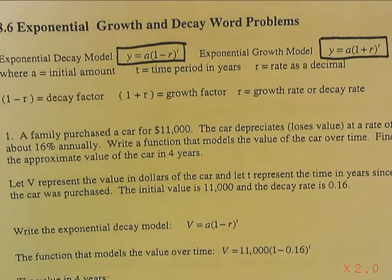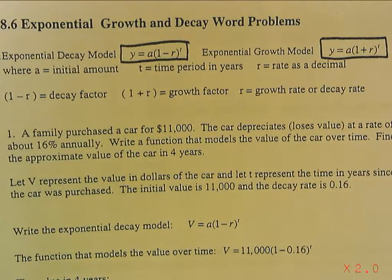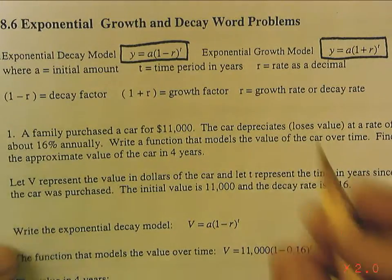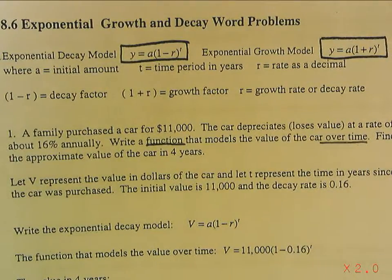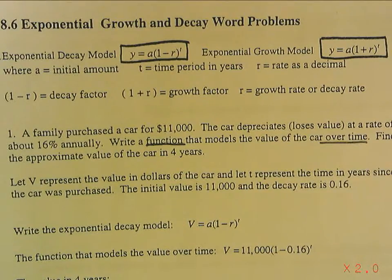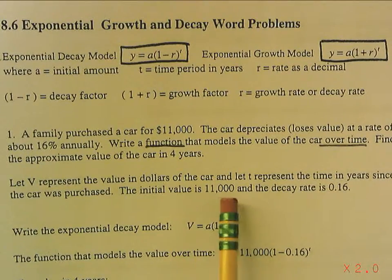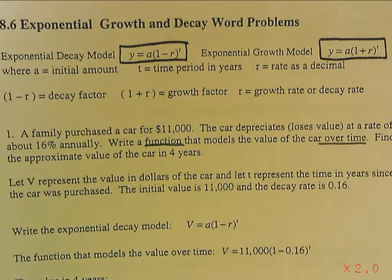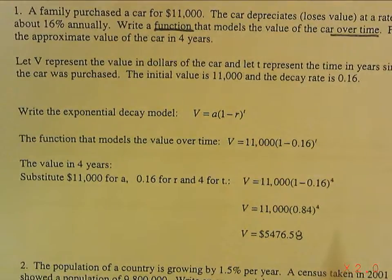Now, it says a family purchased a car for $11,000. The car depreciates or loses value at a rate of 16% annually. Write a function that models the value of the car over time. So, when I say function over time, that means t and y are not going to be filled in. Find the approximate value of the car in four years. So, I let v represent the value and t represent the time. The initial value is 11,000, and the decay rate is 16% or .16. So, I plug that in,